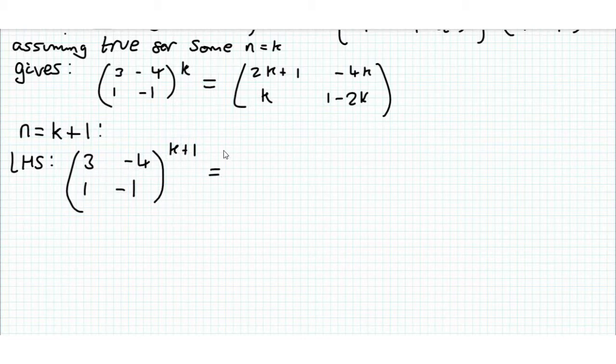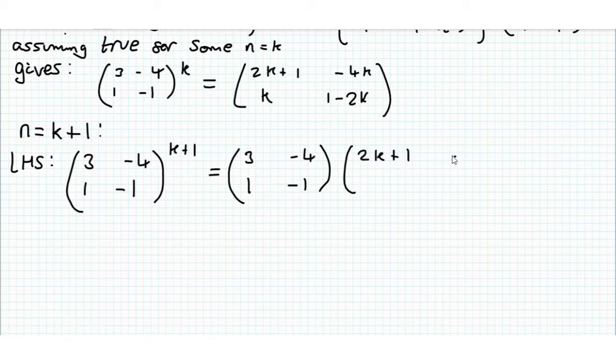When you multiply two things together with the same base, you add the powers. That's a general rule we're all familiar with. But (3, -4; 1, -1) to the power of k, by our assumption, is equal to (2k+1, -4k; k, 1-2k). So now what we have to do is this matrix multiplication and see what we get.